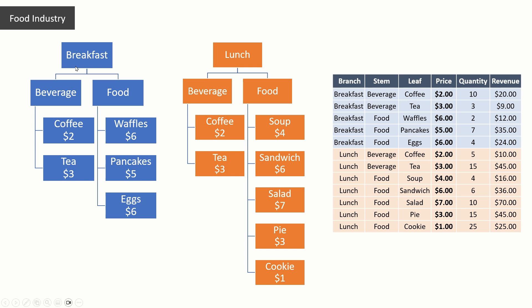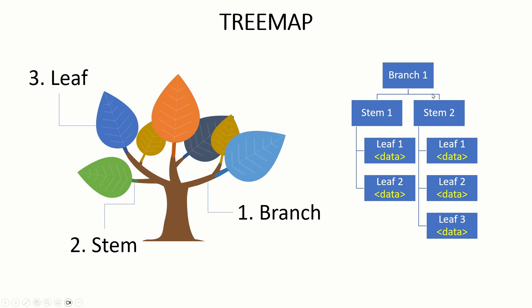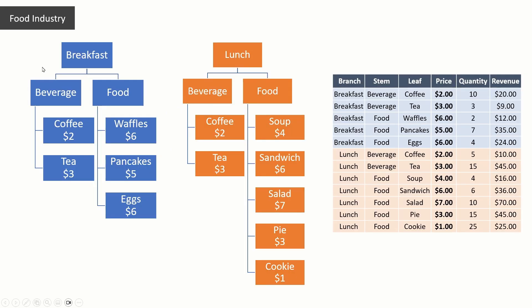Let's look at an example from the food industry — sales data for a cafe. Under breakfast we have two categories: beverage and food. Under beverage we have coffee and tea, and under food we have three options. This maps to the branch/stem/leaf structure. On the right I have the same information in a table with breakfast highlighted in light blue and lunch in light orange. Price is the data we'll show first, but we also have quantity and revenue.